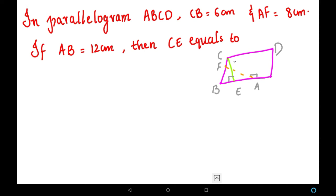If you see this diagram, CB, which is the base for the height AF, is 6 centimeters. And this AF is the height for the base CB, this dotted orange colored line, that is 8 centimeters. And then AB is the base for CE. This one is 12 centimeters, and we have to find the height of this green line, that is CE.